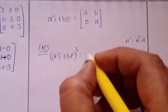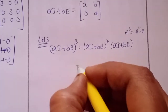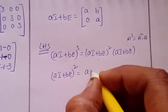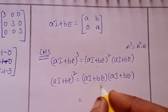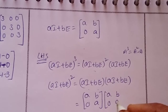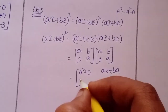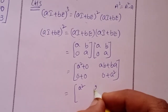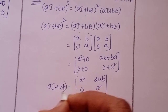Now compute (aI + bE)^2 equals (aI + bE) into (aI + bE), which is [a,b / 0,a] into [a,b / 0,a]. Multiplying: (a^2+0), (ab+ba)=2ab, (0+0)=0, (0+a^2)=a^2. So (aI+bE)^2 equals [a^2, 2ab / 0, a^2].